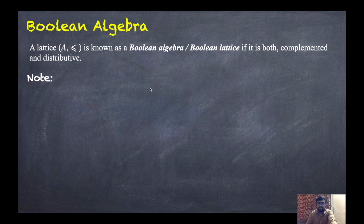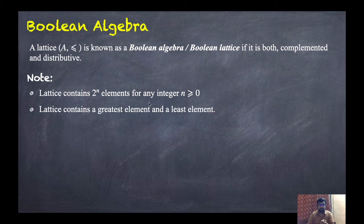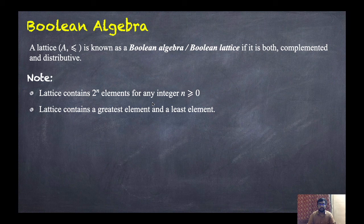Now let us take note. There are two important points. First, a Boolean algebra contains 2^n elements for any n ≥ 0. Second, if it is a Boolean algebra, then the lattice contains a greatest element and a least element of the whole graph.